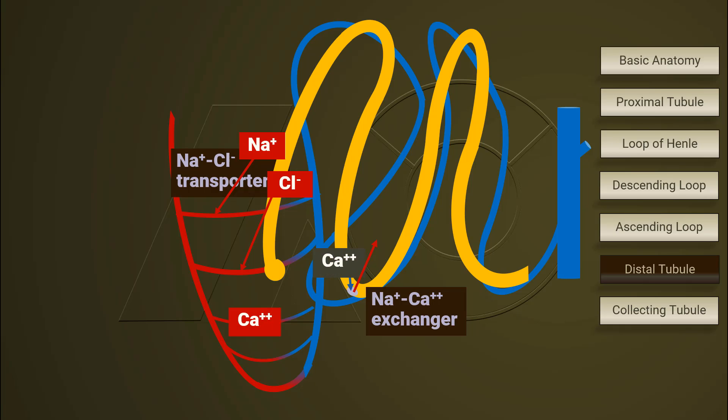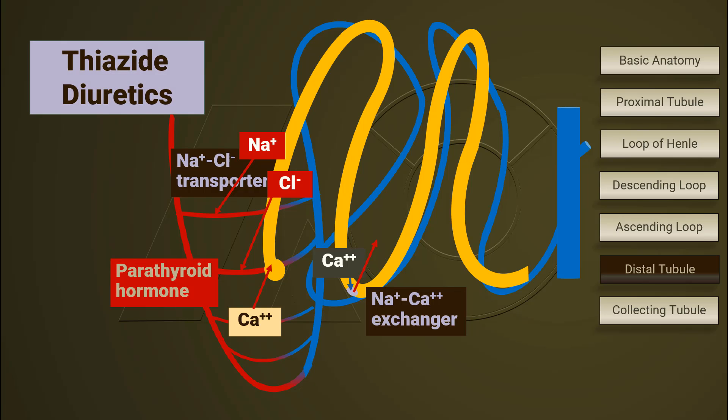At the same time, calcium is excreted into lumen as influenced by parathyroid hormone. Thiazide diuretics work here by affecting the sodium chloride transporter.